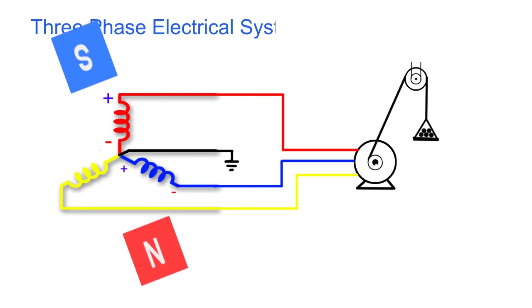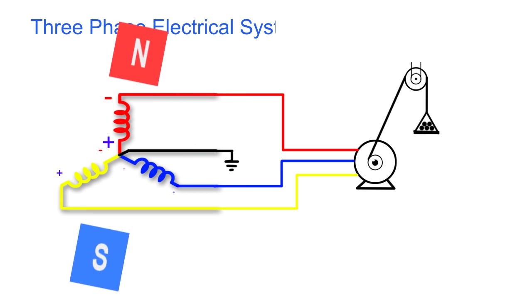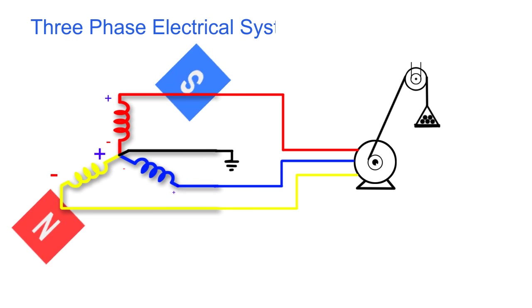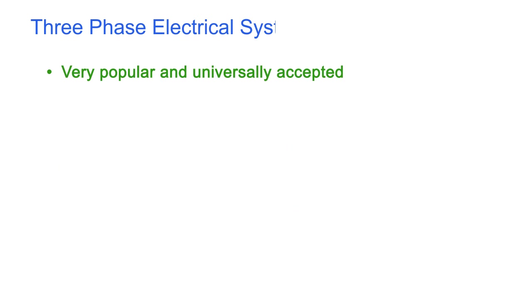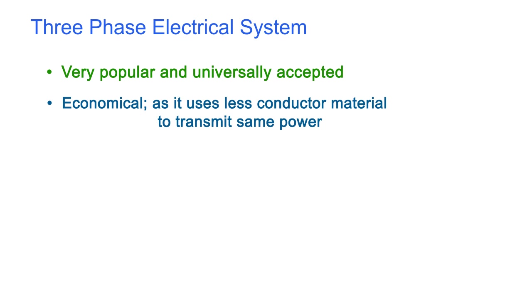So in this way, three-phase electrical power is generated. Three-phase power is very popular and universally accepted throughout the world from electricity generation to utilization. A three-phase system is usually more economical than an equivalent single phase at the same line to ground voltage because it uses less conductor material to transmit electrical power.